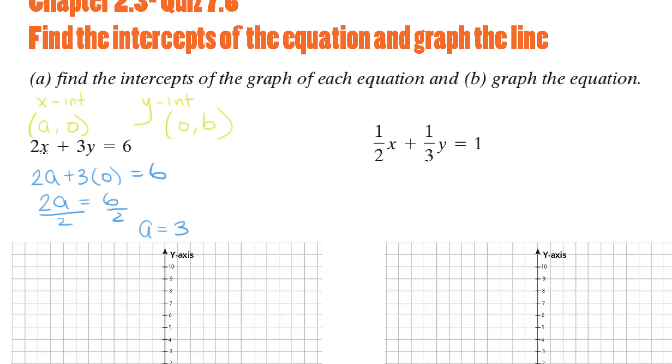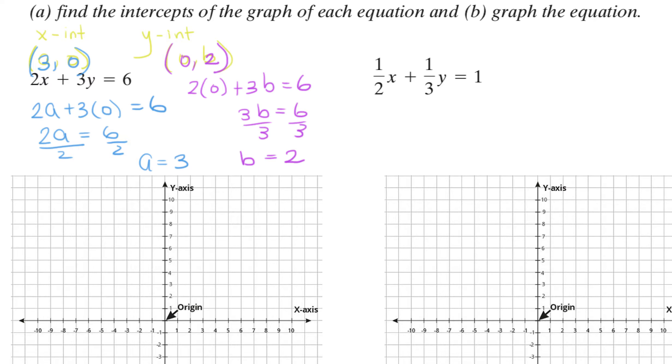For the y-intercept, we plug in 0 for x and b for y. So you have 2 times 0 plus 3b equals 6. Now 2 times 0 is 0, 3b equals 6 means that b equals 2. Just like the previous problem, that means that the y-intercept is (0, 2).